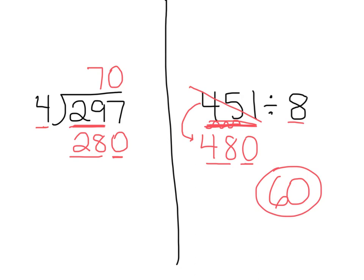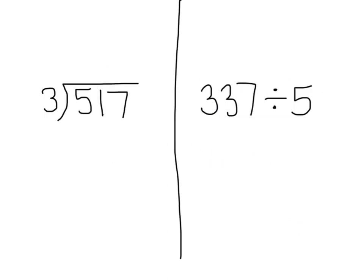If I got a calculator and did 451 divided by 8, the answer would be somewhere around 60. Let's try another one: 517 divided by 3. Does 3 divide into 5? Yes, but not evenly. So I need to think of a compatible number. What is close to 5 that 3 will divide into? 6. So I'm going to change this 5 to a 6 and add two more zeros. Now 517 is pretty close to 600. I can use mental math: 6 divided by 3 is 2, and then I add the two zeros. My estimate is 200.